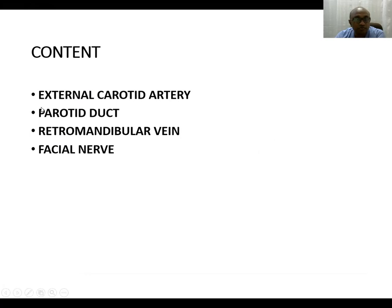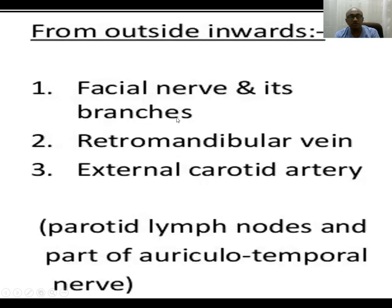In terms of content, there are four structures: mostly the external carotid artery, parotid duct, retromandibular vein, and facial nerve. Apart from that, sometimes enlarged parotid lymph nodes are found. If you see the structures from lateral to medially, you will find the facial nerve and its branches, retromandibular vein, external carotid artery, and part of the auriculotemporal nerve and parotid lymph nodes as the usual contents.